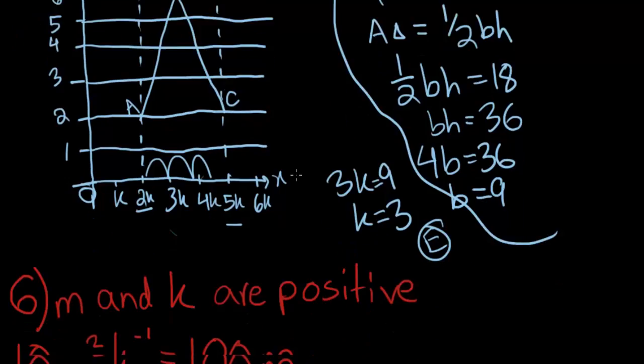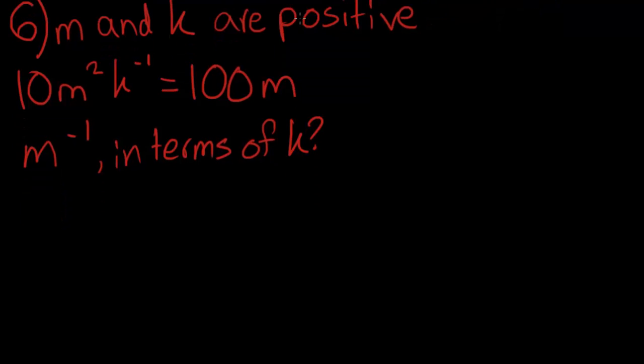Moving on to number 6, which is on the next page. If M and K are positive and 10M to the power of 2 times K to the power of negative 1 is equal to 100M, what is M to the power of negative 1 in terms of K? Lots of confusing logic here involved, because it's kind of unclear on what to do. First thing we would want to do is simplify this equation.